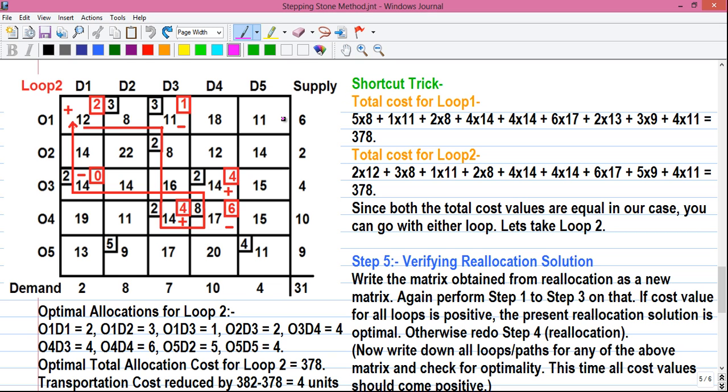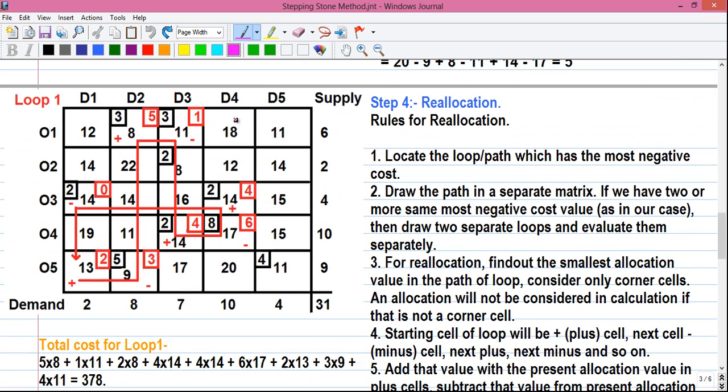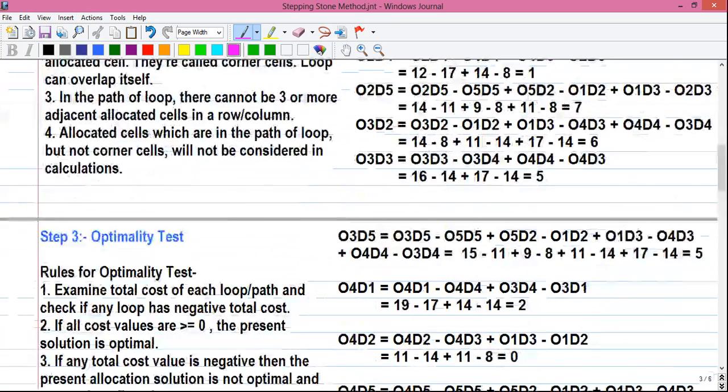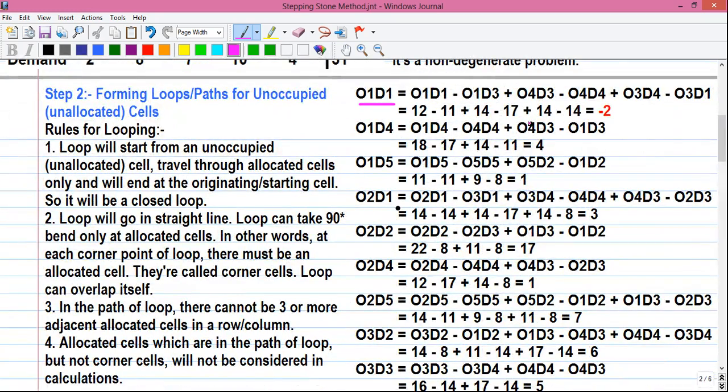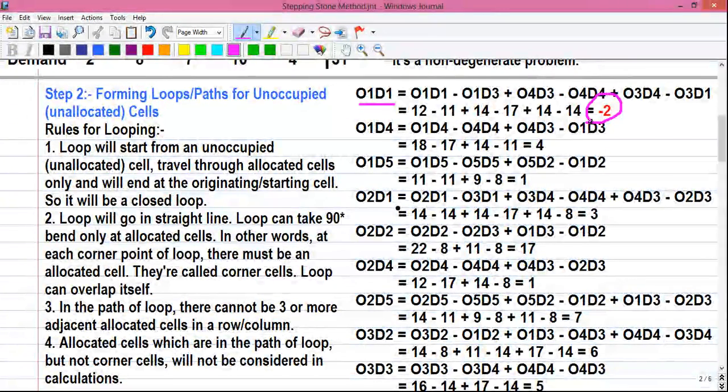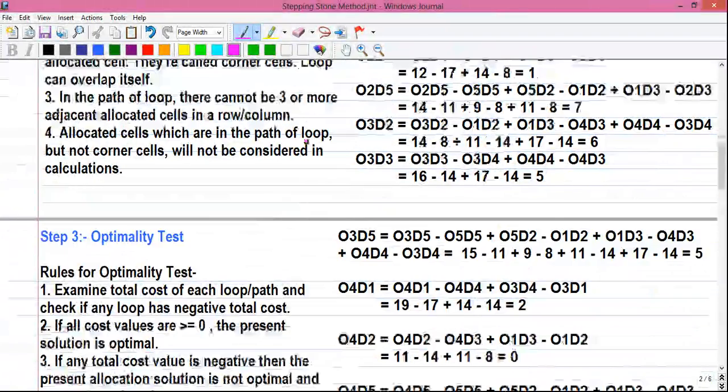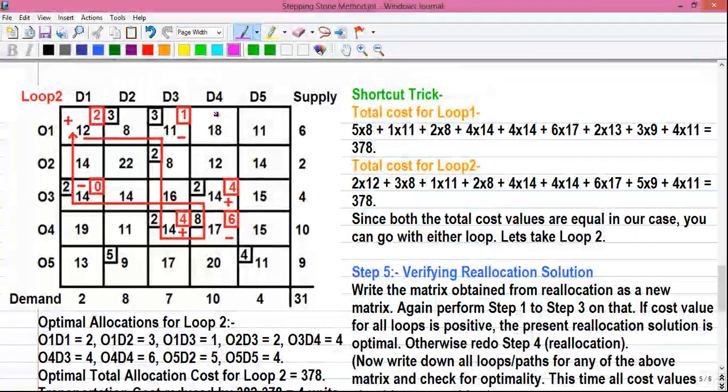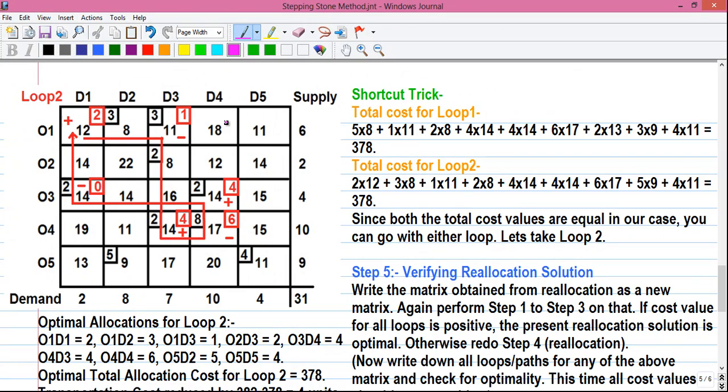Now after forming two loops for two negative values, one for O5D1 with a negative value minus 2 and another for O1D1 with a negative value minus 2. If you follow the traditional rule, after drawing a reallocation matrix, next you have to write down all the loops for all unoccupied cells.